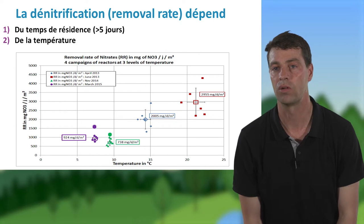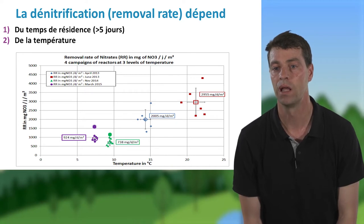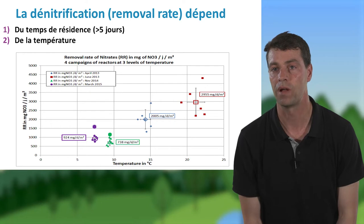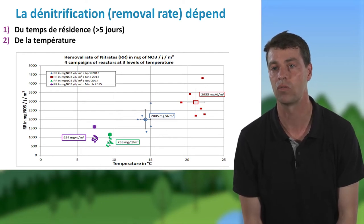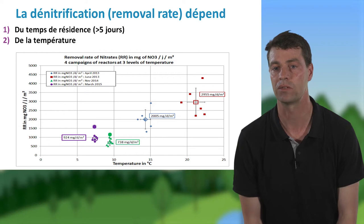On voit sur le graphique que la température joue un rôle important dans le processus de dénitrification, ici appelé « removal rate », qui varie entre des valeurs assez faibles pendant l'hiver et des valeurs très importantes pendant l'été. Une valeur seuil de 15 degrés a été retenue comme optimum de dénitrification.